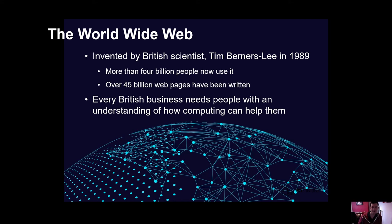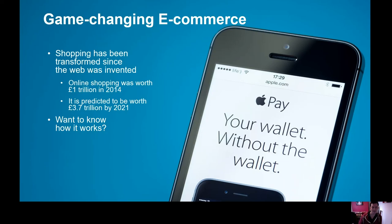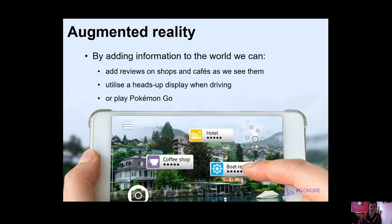What about game changing e-commerce? Shopping has been transformed since the web was invented. Online shopping is now worth one trillion in 2014. It's predicted to be worth 3.7 trillion by 2021. Do you want to know how that works? I think computer science might be for you. Augmented reality is a massive technology that's popping up, showing something to your camera and then being able to interact with it in whole new ways.